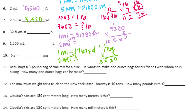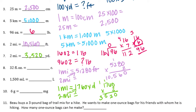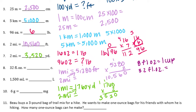32 fluid ounces is equal to how many cups? That conversion rate would be: there are 8 fluid ounces in 1 cup. So if we had 32 fluid ounces, how many cups is that? We would need to do 32 divided by 8, and we would get 4 — so it's equal to 4 cups.